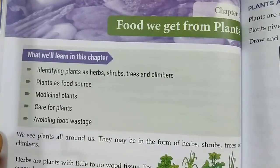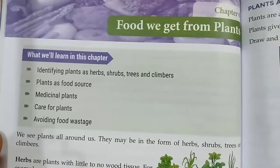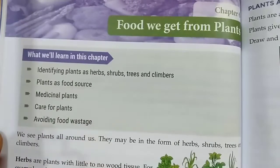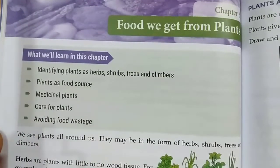In this chapter we will learn about different types of plants. Some plants are called herbs, shrubs, trees, and climbers. We will see the difference between them. We will also learn about plants as a food source — the plants we eat, like green vegetables. And we will study medicinal plants as well.